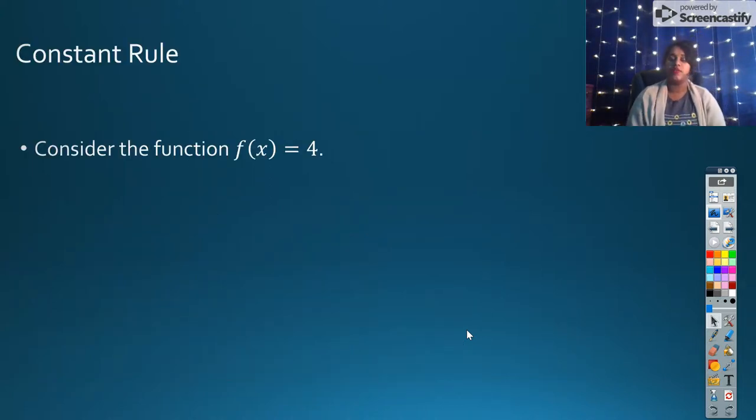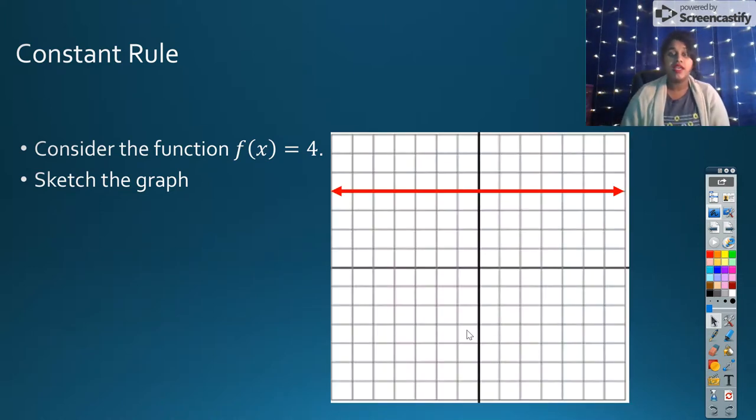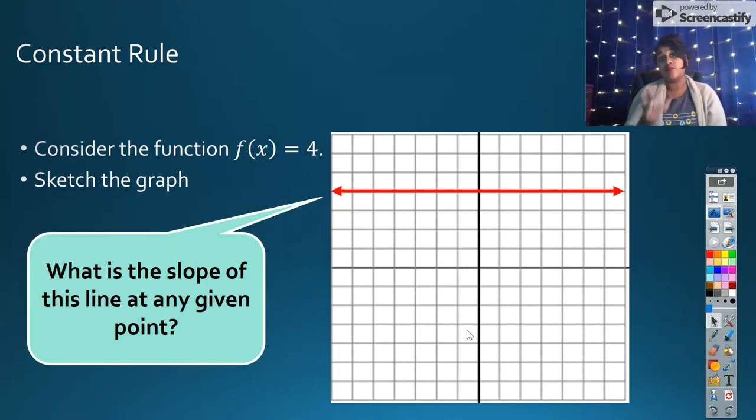We're going to start with our constant function. So consider the function f of x equals 4. In order to really think about that, maybe we need a visual representation. So we're going to go ahead and sketch this graph. It looks like a horizontal line at y equals 4. But what is the slope at this point? Slope is delta y over delta x, change in y over change in x. At no point is there going to be that change in y. That means you have 0 divided by your changes in x. That means your slope will always be 0.